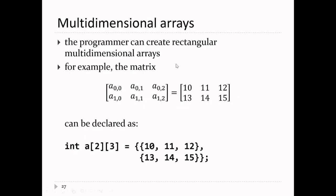So can you create multi-dimensional arrays in C? The answer is yes. Just like in Java where you have a two-dimensional array, you can have a two-dimensional array in C, or a three-dimensional, or an n-dimensional array. If you wanted to make a matrix with six elements in it, you would declare an array of int as follows: a[2][3], meaning two rows and three columns.